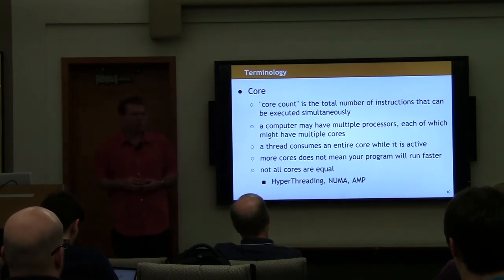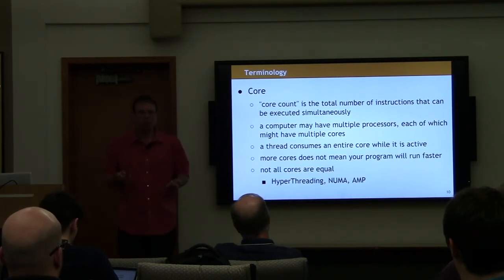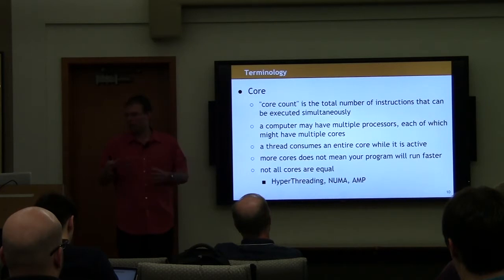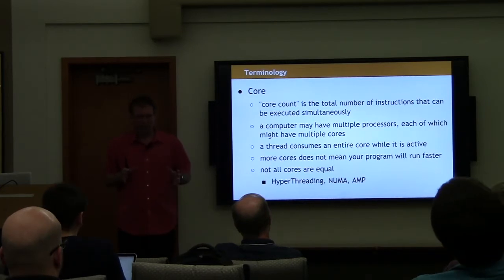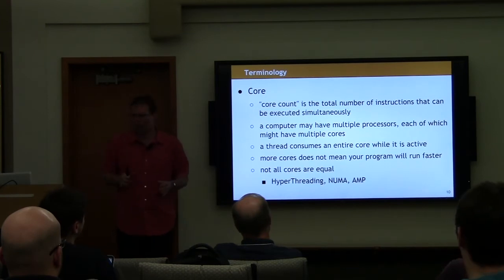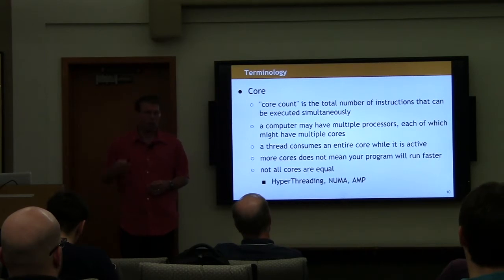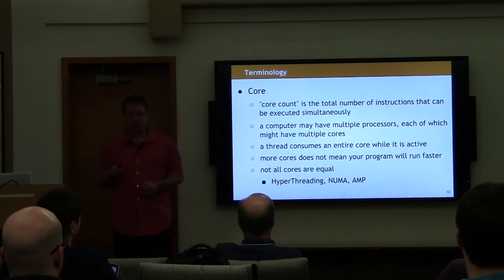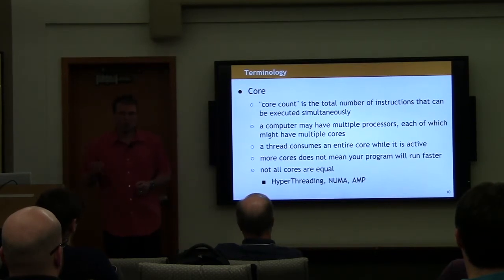The number of cores is a property of the system you're running on — the total number of instructions that can be executing at the same time. While a thread is active, it is using an entire core. While a thread is sleeping, it is not using any cores. More cores doesn't always mean your program will run faster, particularly depending upon how you have implemented the solution to your multithreaded problem.